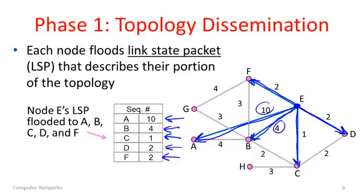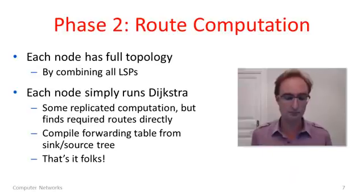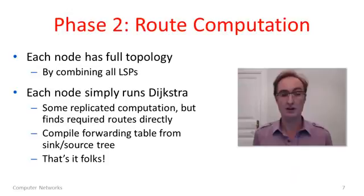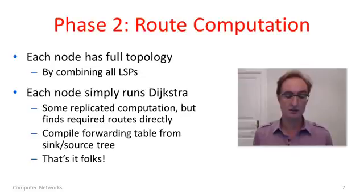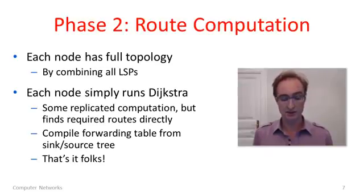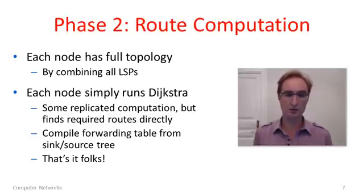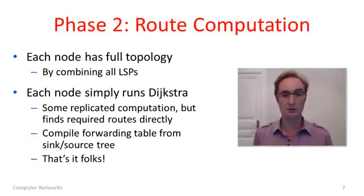Once phase one is completed, every node will have received every other node's link state packet. By putting them together, they'll have a picture of the complete topology. Phase two is to compute the routes — all we do is have every node run Dijkstra's algorithm. The nodes look for the source trees from themselves outward. Once we find the source tree at a node, we can compile the forwarding table directly from it.